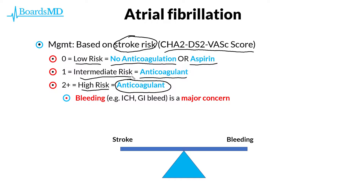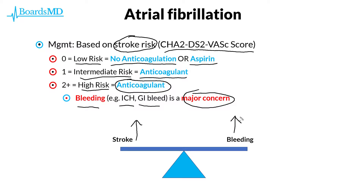The main concern once we place a patient on anticoagulation is going to be bleeding, as the development of intracranial hemorrhages or GI bleeds is a major concern. Therefore, there is always this balancing act between our patients having a stroke versus having a bleed. If we do not anticoagulate these patients, their risk of stroke increases, because patients with atrial fibrillation have an increased risk of developing thrombi in the left atrial appendage that can shoot off to the brain and cause a stroke. However, anticoagulation also increases their chances of developing a bleed, so this balancing act is always paramount when managing patients with atrial fibrillation.